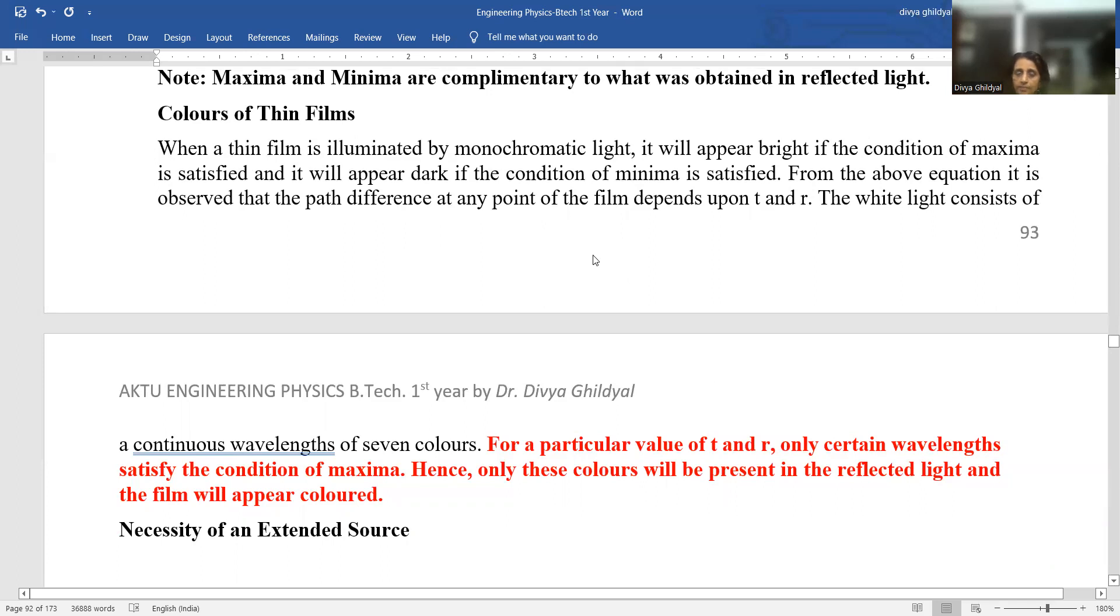white light we know consists of 7 colors. You remember prism where it splits the colors in white light into 7 colors. So, for a particular value of thickness of the thin film and the angle, only certain wavelengths will satisfy the condition of maxima.